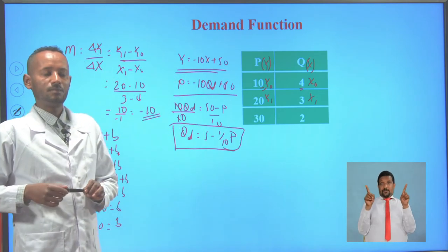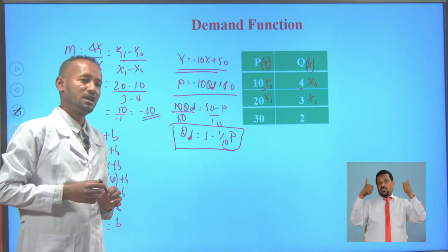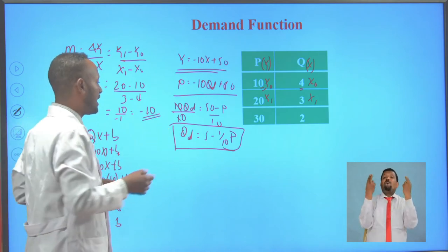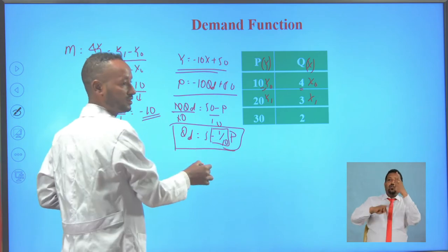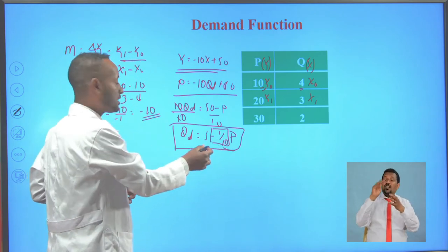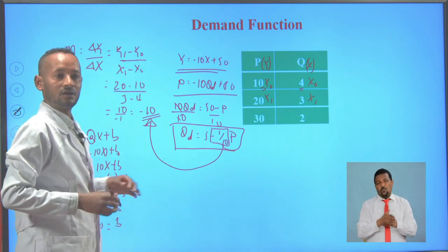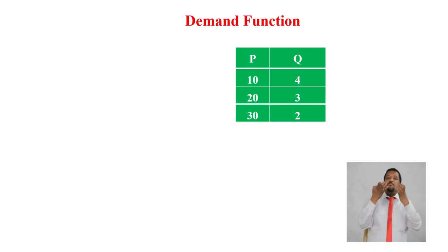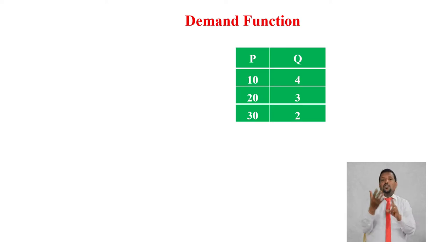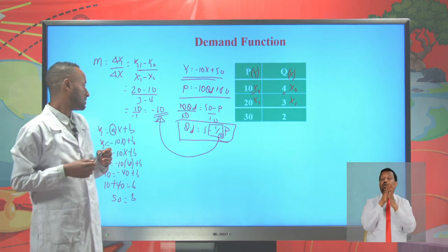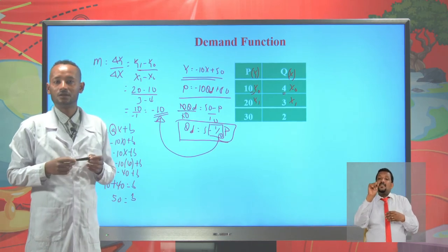Simply by inspection, we can identify the slope of the demand function from the given demand function. The slope is the reciprocal of the coefficient of price. The coefficient of price is −1/10, and the reciprocal of −1/10 is −10. This is important information for the calculation of price elasticity of demand using the point formula.